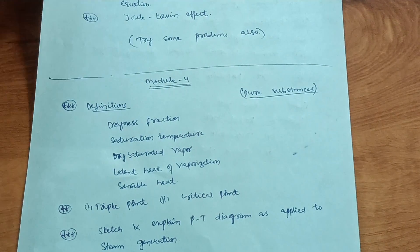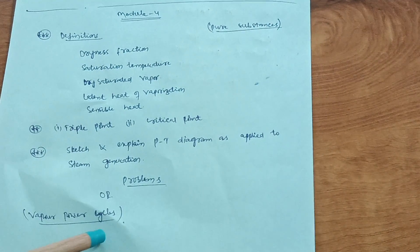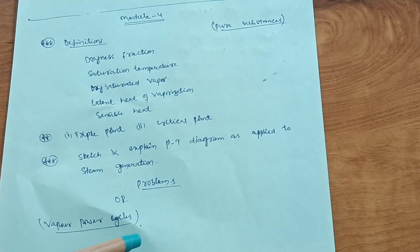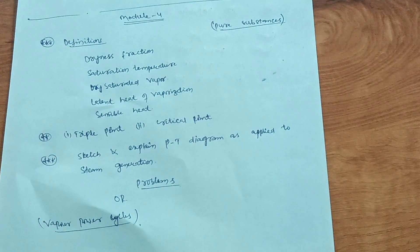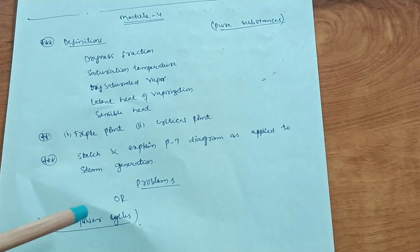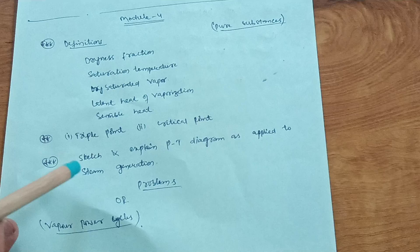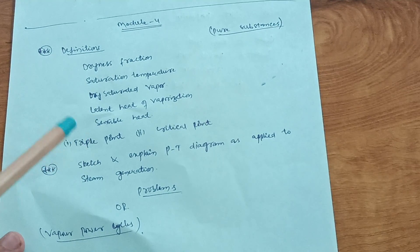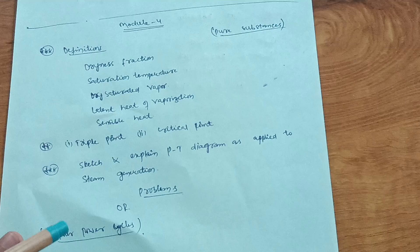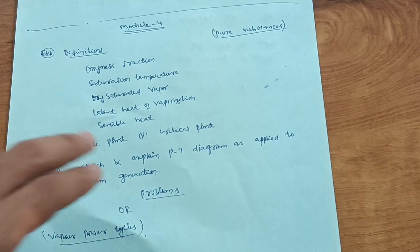If you want problems, you can do problems or go through the next chapter, vapor power cycles like Rankine cycle, Brayton cycle, Carnot cycle. If you find some easiness in that chapter, it is according to your own choice. According to me, you can go through pure substance - it's a very easy part with definitions. In vapor power cycles, some diagrams and graphs are there. If you are confident, go through that chapter.